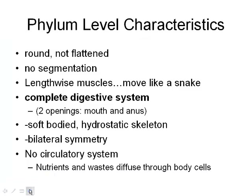Let's look at the phylum-level characteristics. You can pause and jot them down. The big difference between this and the flatworms is obviously these ones are round, not flat. Similar again — no segmentation. Lengthwise muscle allows them to move like a snake. The big difference here is that they have a complete digestive system: two openings, a mouth at one end and the anus at the other. Soft body, hydrostatic skeleton keeps its internal structure due to water pressure. Bilateral symmetry is similar as well, and no circulatory system — nutrients diffuse through the body.